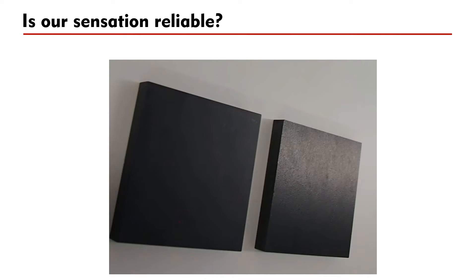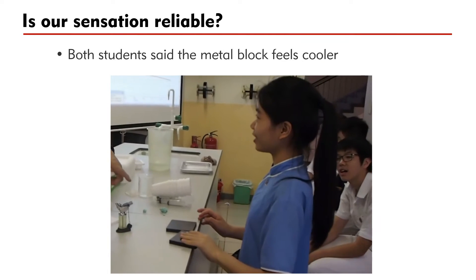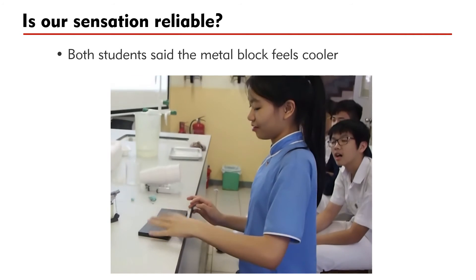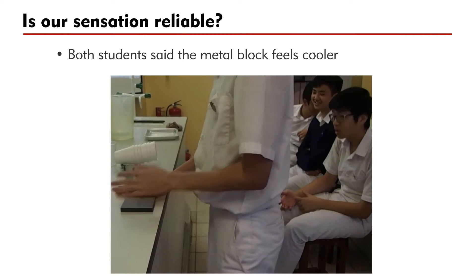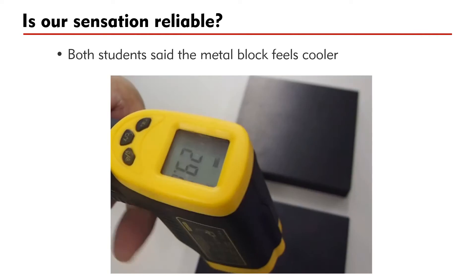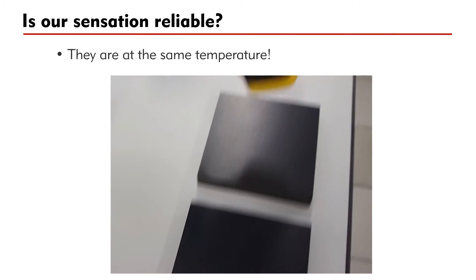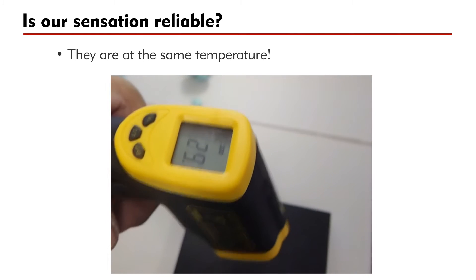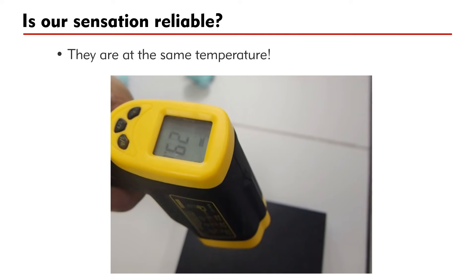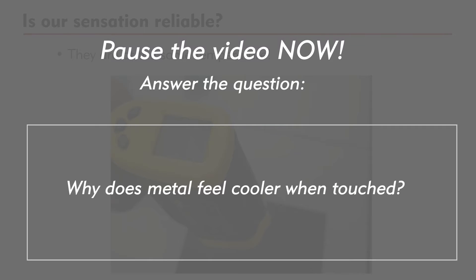Consider the two blocks of the same size and in the same color, one made of aluminum and the other made of wood. Both students touching them said that the metal block is cooler. However, an infrared thermometer tells us that they are at the same temperature of 29.2 degrees Celsius. Why does metal feel cooler when touched? Pause the video for a while and answer the question.